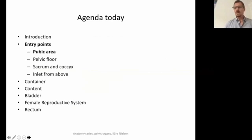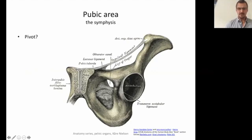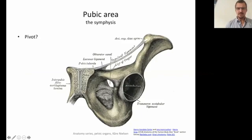We step to the entry points — how can we get in touch with the pelvis and the inside of the pelvis? We start with the pubic area. On this image, you can see one ileum, and the other part is gone, but you can still see the pubic symphysis. There is an interpubic fibrocartilage disc. You can also see the cartilage — it's a no-wheel joint, with ligaments above and below to keep it together.